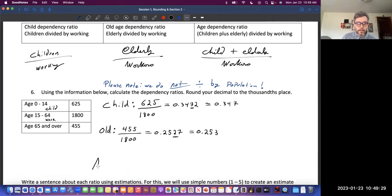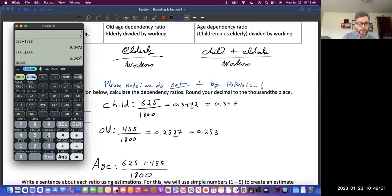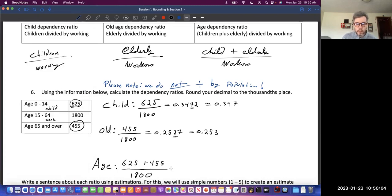Now we're going to do age dependency ratio. This is where we add those two. We add the 625 and the 455, these are the people dependent on the working age, 1,800. 625 plus 455 divided by 1,800 equals 0.6.